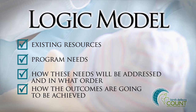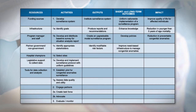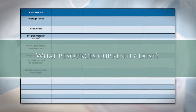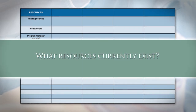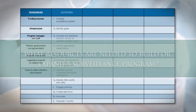Begin by creating a table like this, where you can place all relevant information about your program. Most often, logic models will include the following components. First, resources. What resources currently exist? What resources are needed to build or expand a surveillance program?